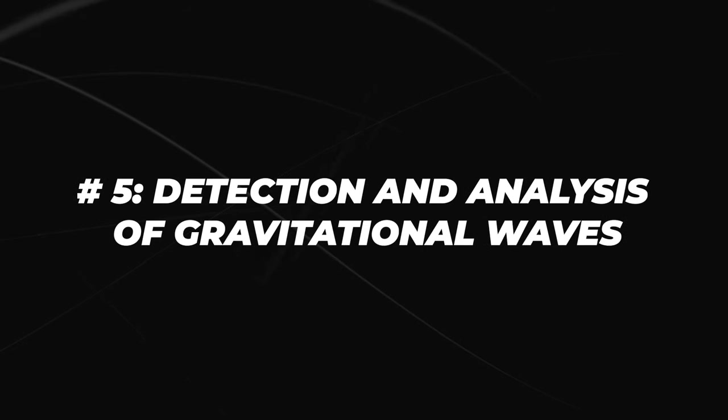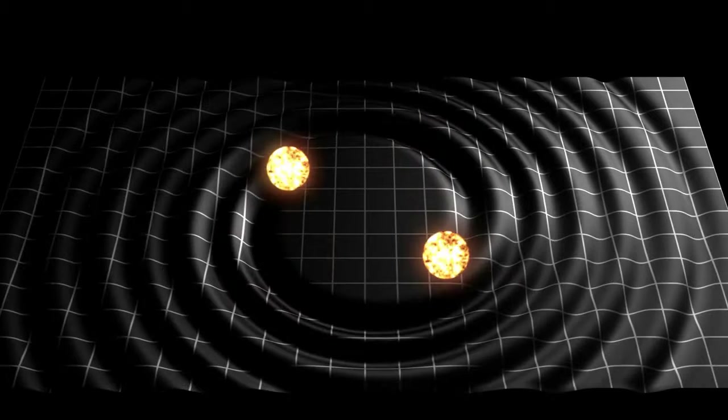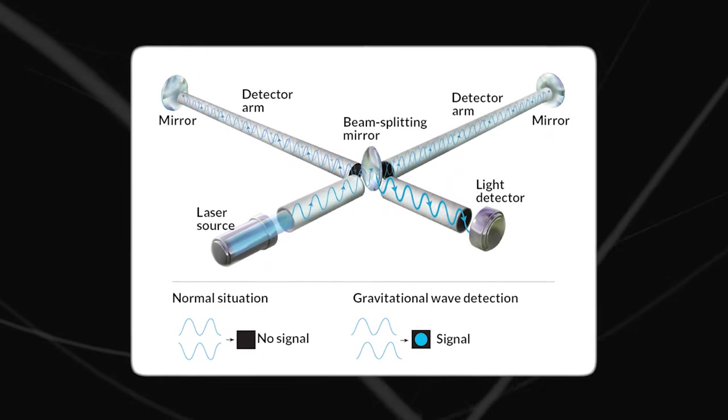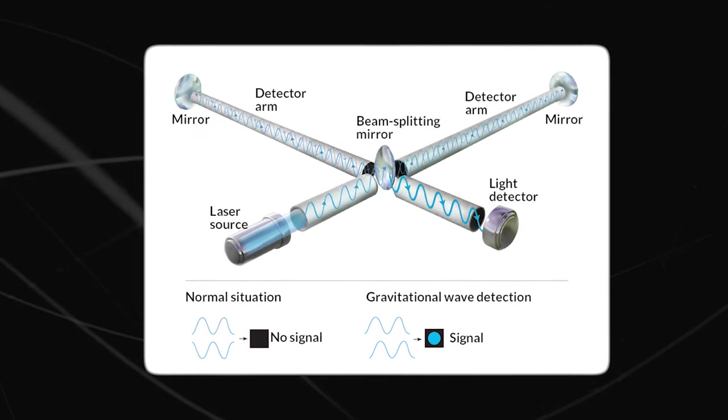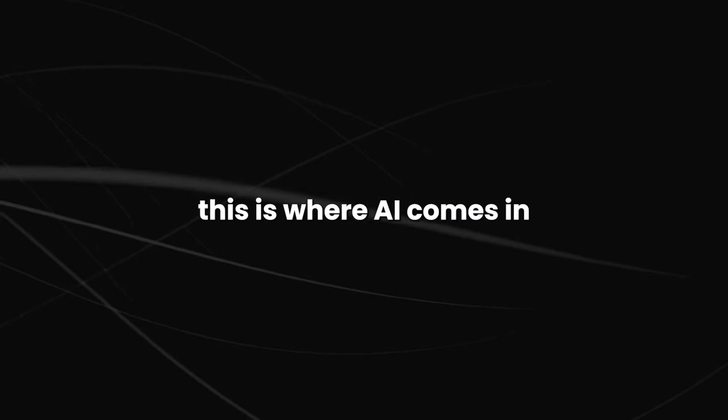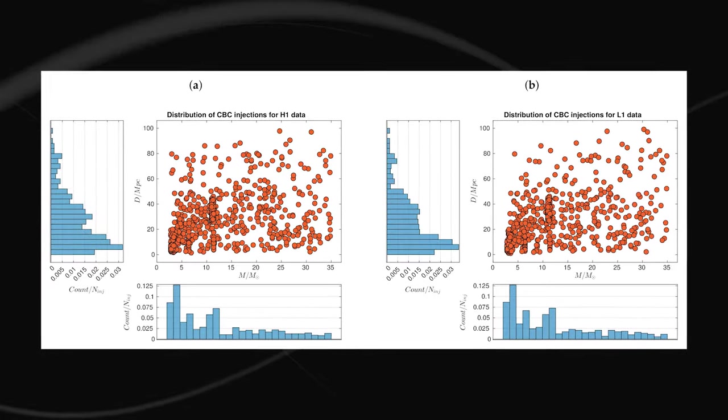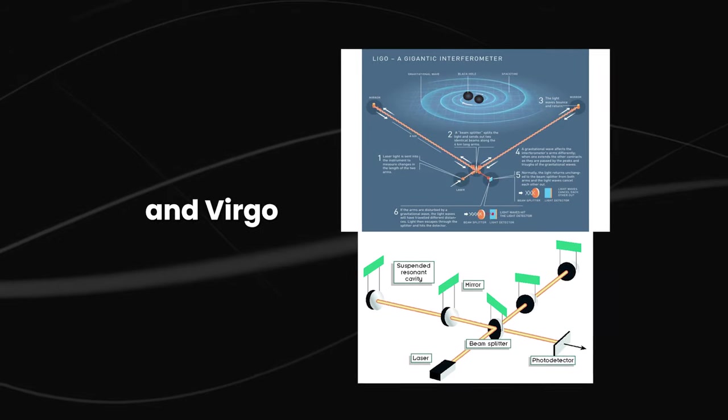Gravitational waves are extremely faint ripples in space-time, and detecting them requires highly sensitive instruments and advanced data analysis. This is where AI comes in. AI algorithms are used to analyze the data from gravitational wave detectors, such as LIGO and Virgo.